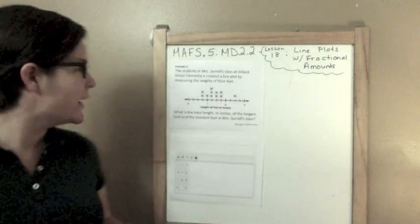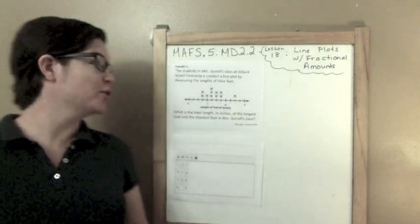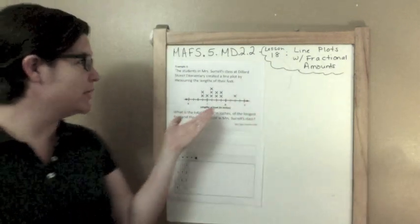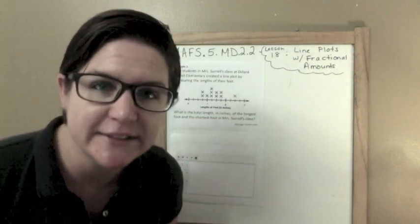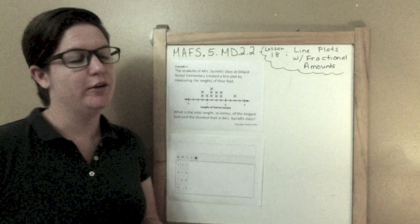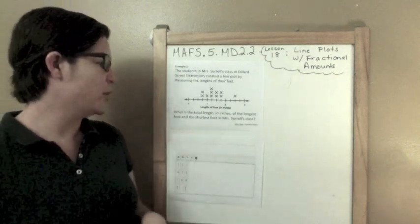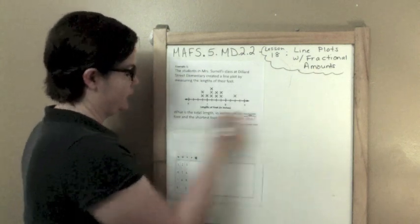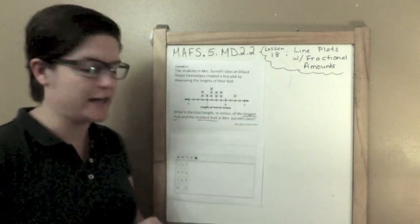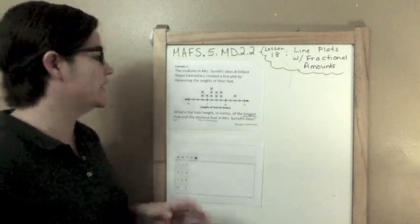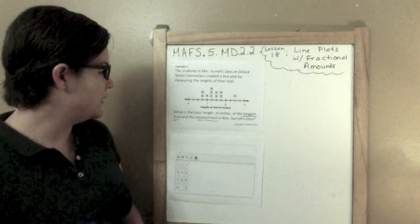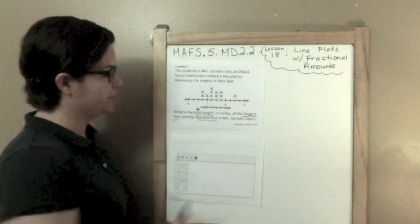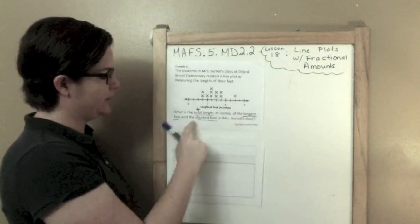Example one. The students in Mrs. Sorrell's class at Dillard Street Elementary created this line plot by measuring the lengths of their feet. What is the total length in inches of the longest foot and the shortest foot in Mrs. Sorrell's class? So here's what we're going to do. The total length means we're going to be adding those babies.